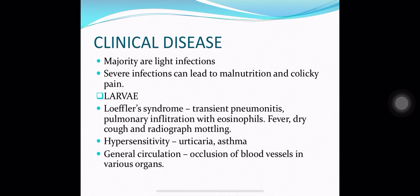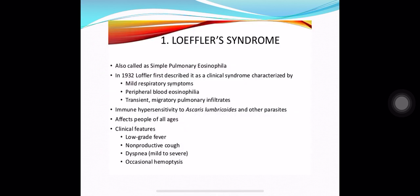Clinical disease caused by Ascaris Lumbricoids: the majority are light infections, but severe infections can lead to malnutrition. Both larvae and adults produce clinical effects. Larvae cause Loeffler's syndrome while passing through the lungs: transient pneumonitis, pulmonary infiltration, and eosinophilia. Fever, dry cough, and radiograph mottling can be seen. It can also lead to hypersensitivity reactions such as urticaria and asthma. In the general circulation, larvae can cause occlusion of blood vessels in various organs. Features of Loeffler's syndrome include mild respiratory symptoms, peripheral blood eosinophilia, transient migratory pulmonary infiltrates, low-grade fever, non-productive cough, dyspnea, and occasional haemoptysis.